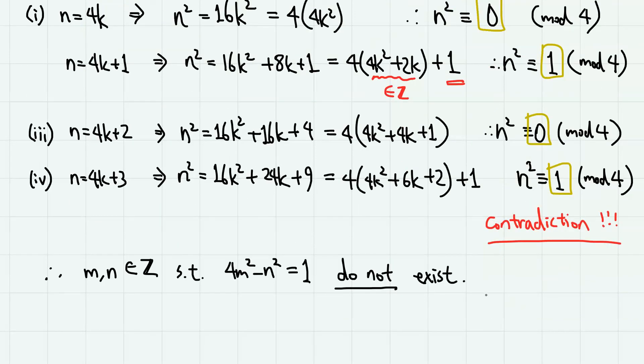And this basically concludes the proof. So we have our conclusion that integers m,n such that 4m² - n² = 1 do not exist. And that was all for this video. Thank you for watching.